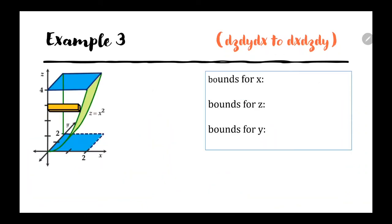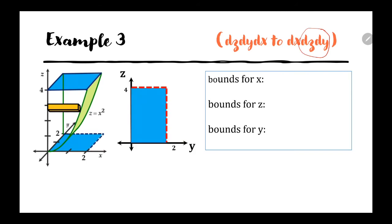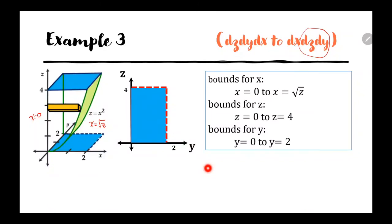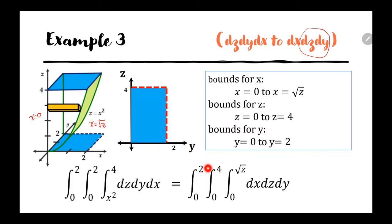From this solid, we reconstruct the bounds to have the order dx dz dy. Since the last two variables are z and y, we need a region on the yz plane. Looking at the graph of the solid, we have a rectangular region from y equals 0 to 2 and z equals 0 to 4. For the bounds of x, the lower bound is the plane x equals 0 and the upper bound is the cylinder x equals square root of z. So the bounds for x go from 0 to square root of z, bounds for z from 0 to 4, and bounds for y from 0 to 2, giving us the triple integral of order dx dz dy.